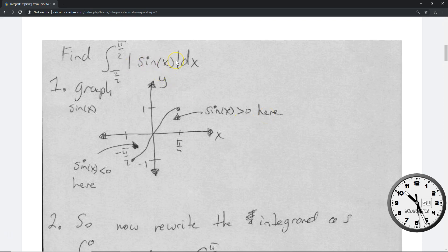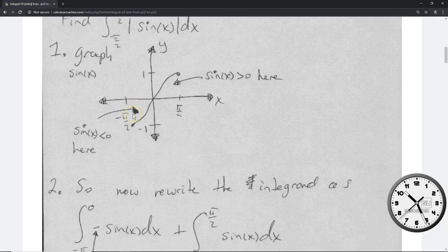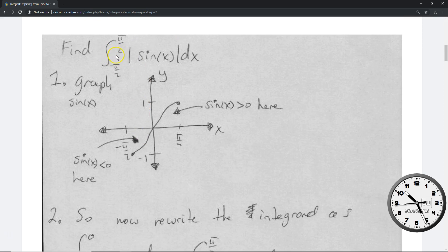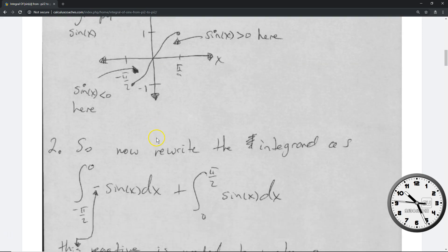The absolute value of sine of x you have to do by breaking it up into individual pieces. That's a way of doing it. Take a look. Because this portion where sine of x is less than 0 is negative, you can break up this integral with the absolute value bars as follows down below.